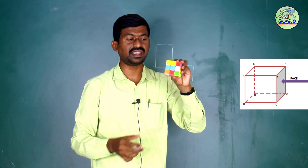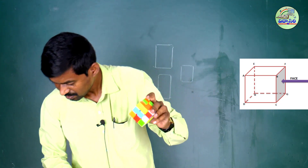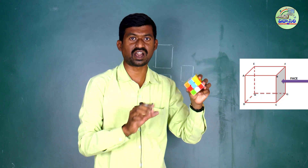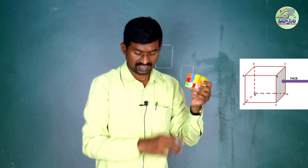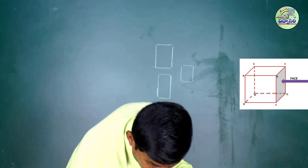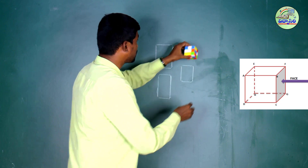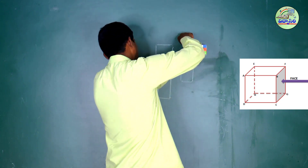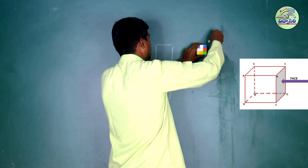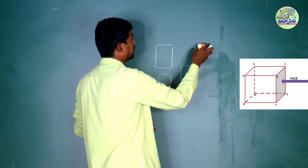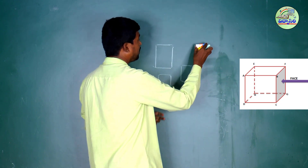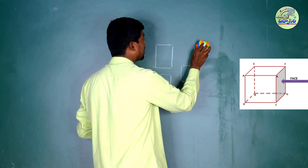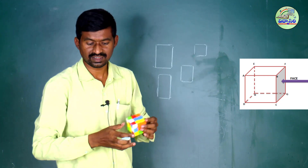A dice must always have 6 faces. I am tracing this one. Now see — all faces, all faces are the same.